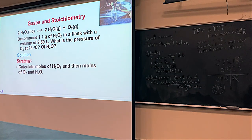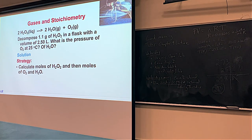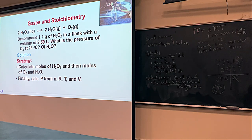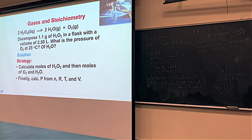First, find how many moles of hydrogen peroxide we have. Then use stoichiometry — the 2:2 ratio for water or the 2:1 ratio for oxygen — to find moles of water or moles of oxygen. Once we have the moles, use the ideal gas law PV = NRT and solve for P. V is the 2.50-liter flask, N is the calculated moles, T is temperature in Kelvin, and R is 0.082057.